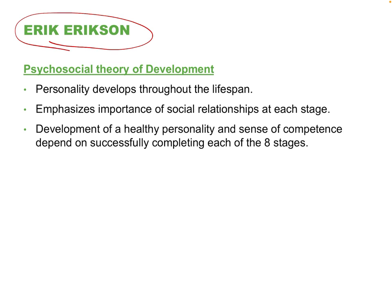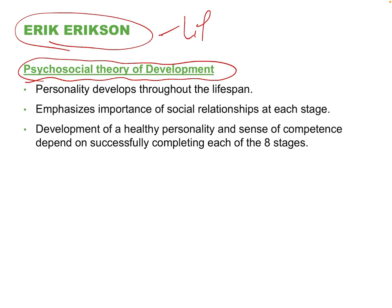Erik Erikson, also a psychoanalyst, proposed the psychosocial theory of development, where we go through eight different stages and conflicts. This is described in more detail in the lifespan chapter. Basically, to be a healthy adult, hopefully we've gone through these eight challenge stages in our lives in a balanced way. Each one is associated with a particular age range, which is why it fits well within lifespan psychology.